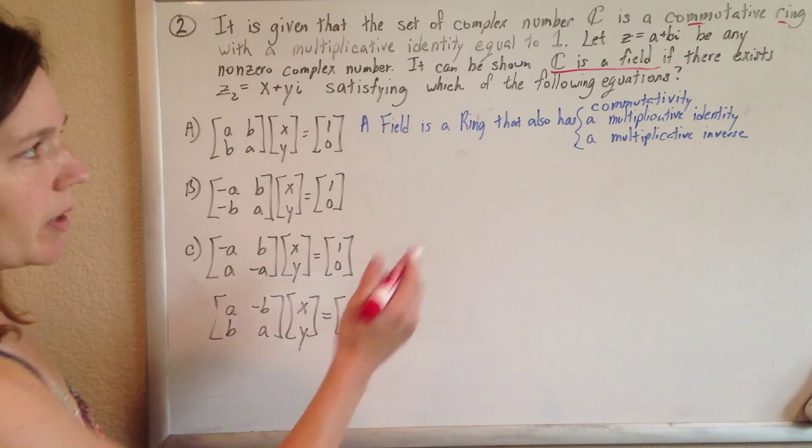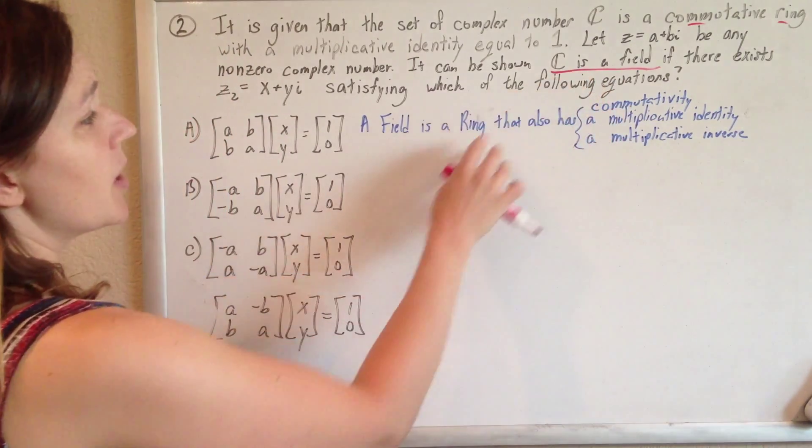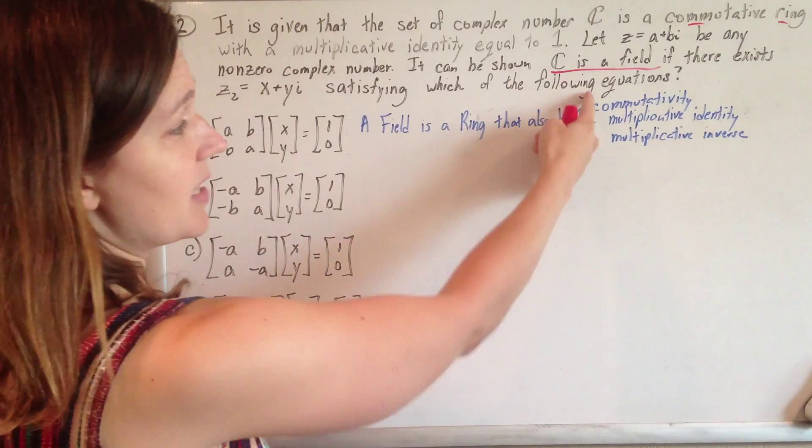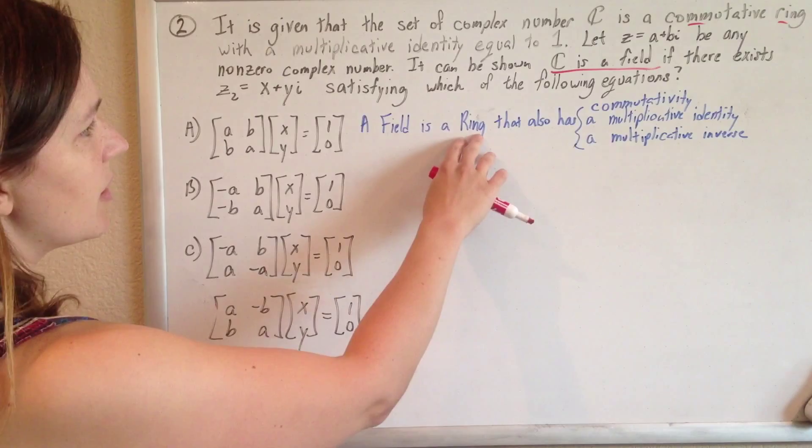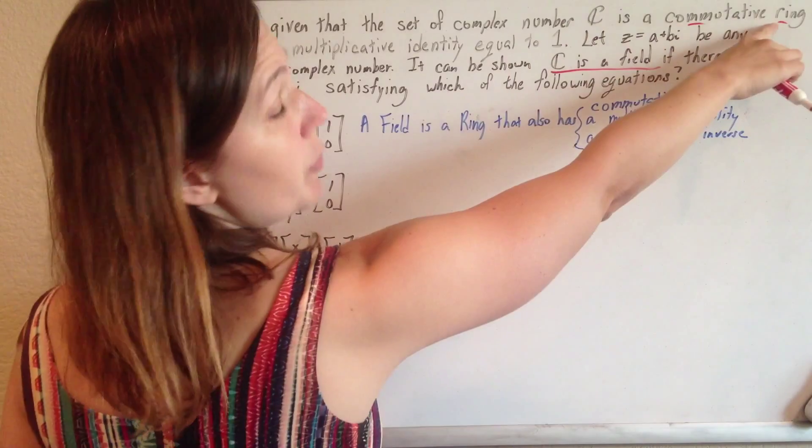But here we go, just kind of focusing in on what we need. We need to show that C is a field. So a field is a ring that satisfies a few additional properties, and they've already told us that C is a commutative ring.